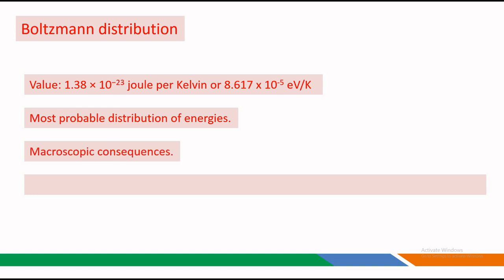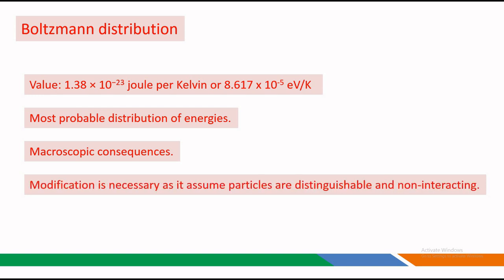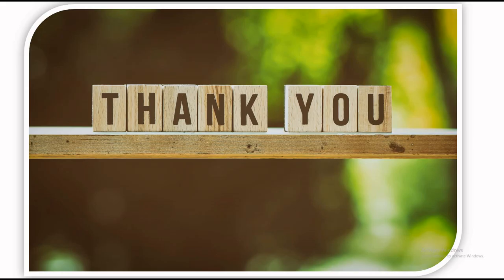Although it describes the microscopic behavior of particles, the Boltzmann distribution has macroscopic consequences, influencing the thermodynamic properties of the system. The Boltzmann distribution assumes that particles are distinguishable and non-interacting, which puts limitations on its use in quantum systems or systems with strong interactions. Overall, the concept of Boltzmann distribution is closely linked to entropy in thermodynamics — entropy tends to increase and the system tends to evolve towards the state with the highest probability according to the Boltzmann distribution. Thank you for listening to this video.